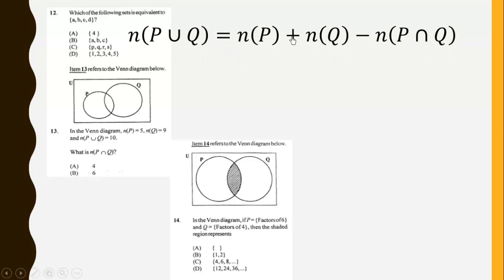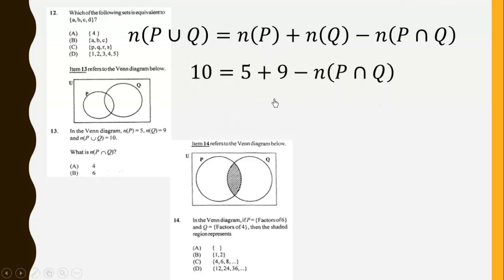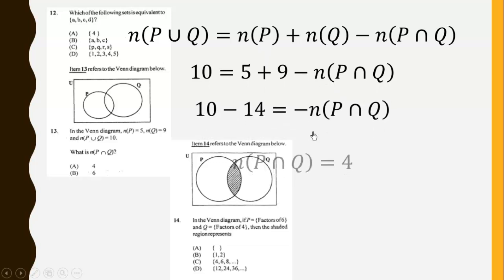In the Venn diagram, the number of P equals 5, number of Q equals 9, and number of P union Q equals 10. What is the number of P intersection Q? We substitute into the relation |P∪Q| = |P| + |Q| − |P∩Q| and simplify to get the intersection equal to 4.